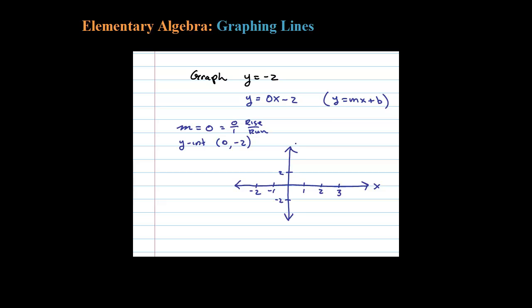So here's my blank Cartesian coordinate system. Always start at the y-intercept, so 0 comma negative 2 is right here. The slope is 0, so we know it's going to be a horizontal line.